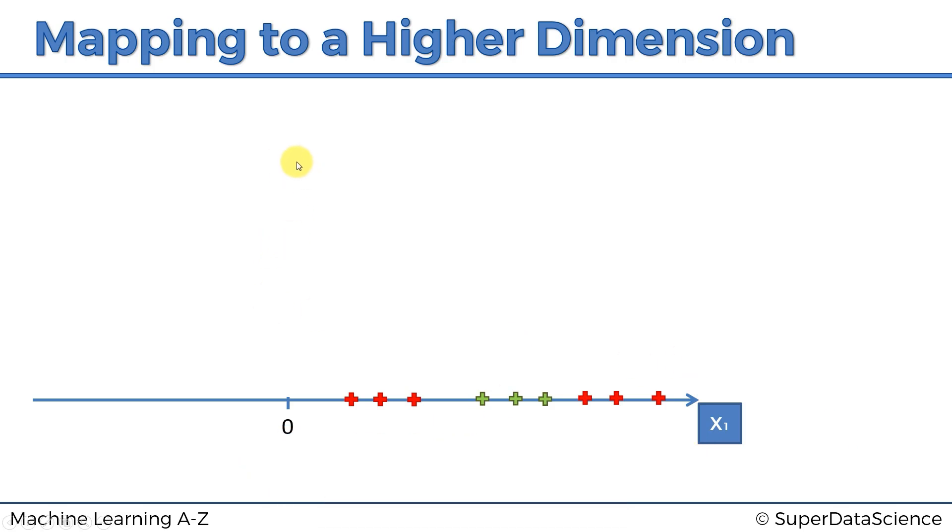So in a two dimensional space, a linear separator is a line. In a three dimensional space, it's a hyperplane, but in a one dimensional space, it's a single dot. So can we separate the green from the red with a single dot here? No, we cannot. If we put it here, then these will be separated from that. If we put it here, it'll be separated from that. So this is a non-linearly separable data set.